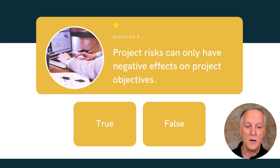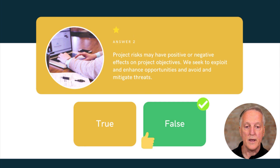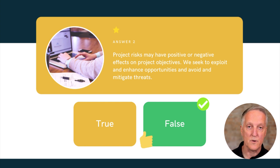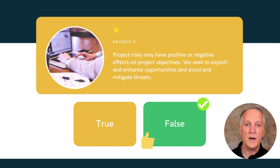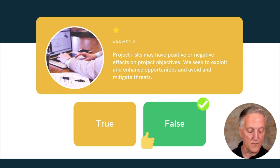Here's another question: project risk can only have negative effects on project objectives. The answer is false. Project risks are uncertain events or conditions, and sometimes those events or conditions may have positive effects on our project objectives. So project risks may have positive or negative effects on our project objectives.